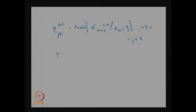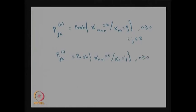We also discussed in the last class the one-step transition probability p_{j,k}, written with superscript 1 or without. That is the probability that the system will be in state k at step n+1 given that it was in state j at step n, where j, k belong to S.